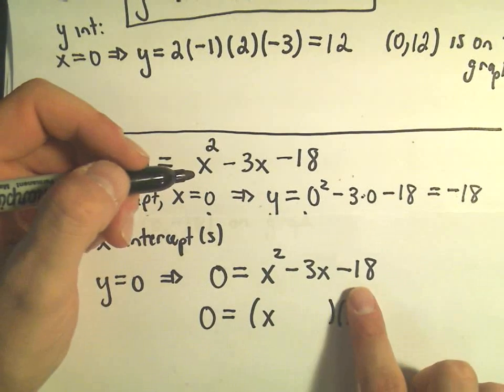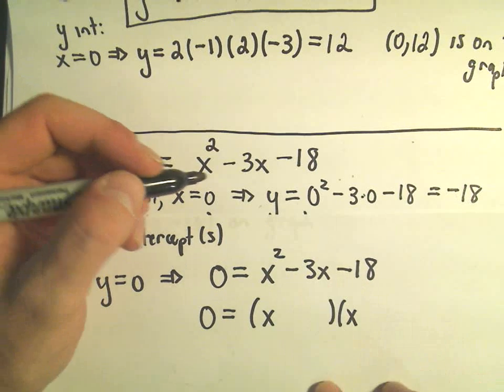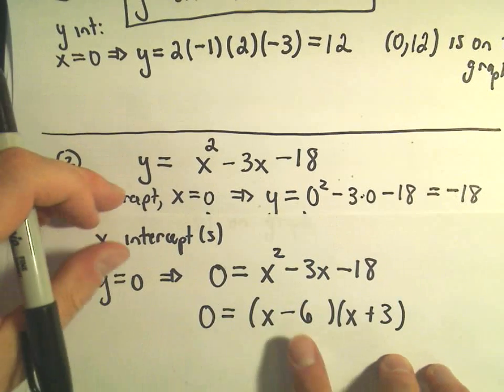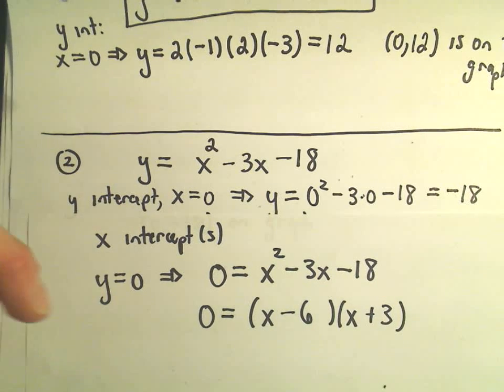So I need two numbers that multiply to negative 18, but add up to negative 3. I think negative 6 and positive 3 would be the two numbers that have that property.